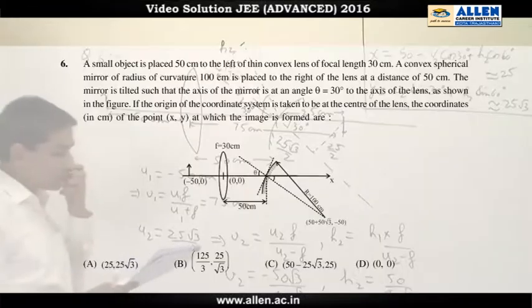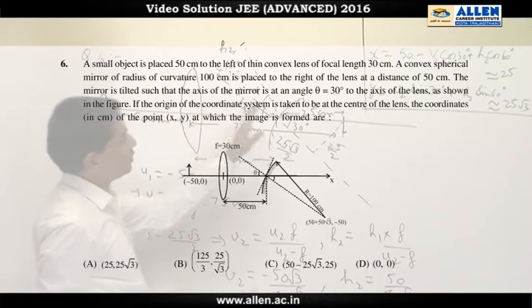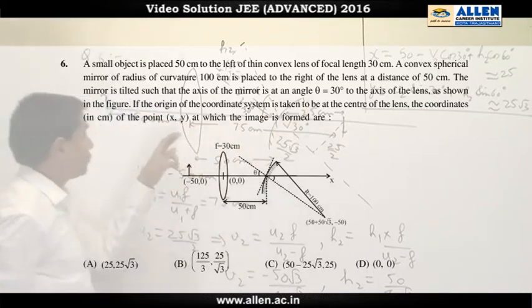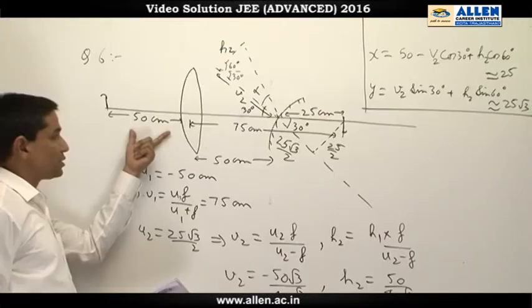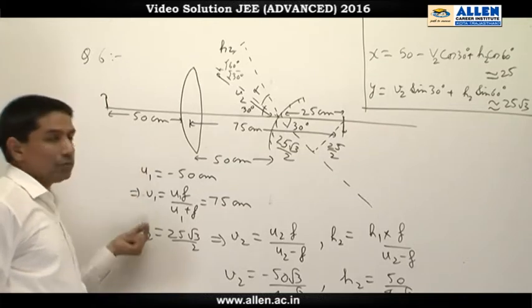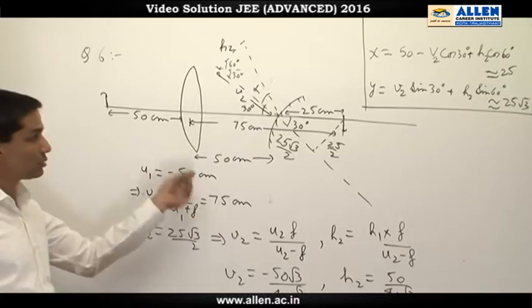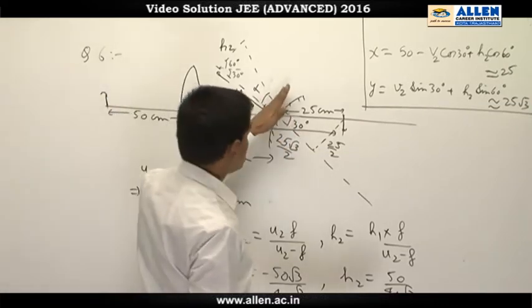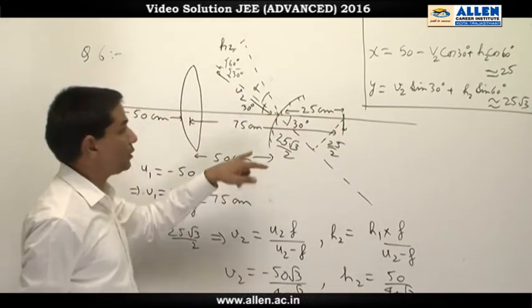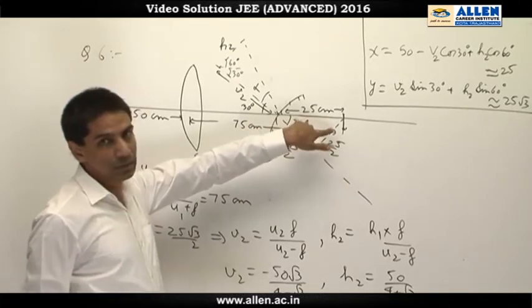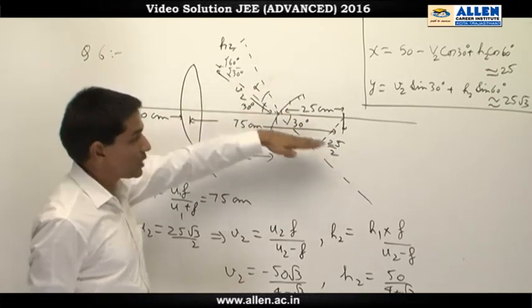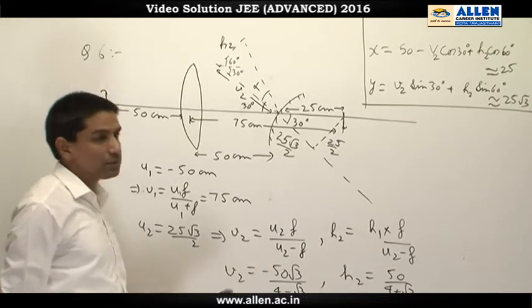Here there is a lens and then a spherical mirror. Object for the lens is at 50 centimeter. By using lens formula, the image of the lens is formed at 75 centimeter from the lens on the principal axis. That means 25 centimeter behind the mirror, but since the mirror's principal axis is inclined at 30 degrees to this axis.